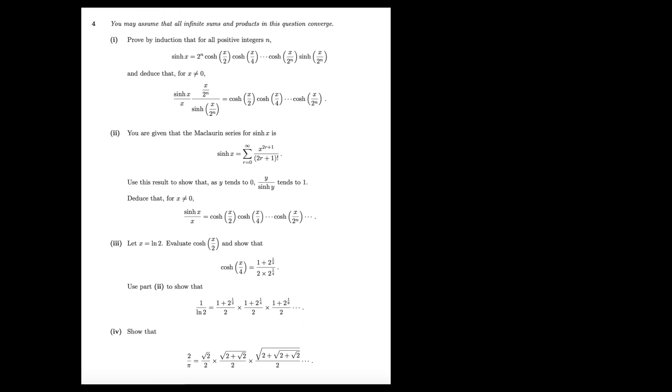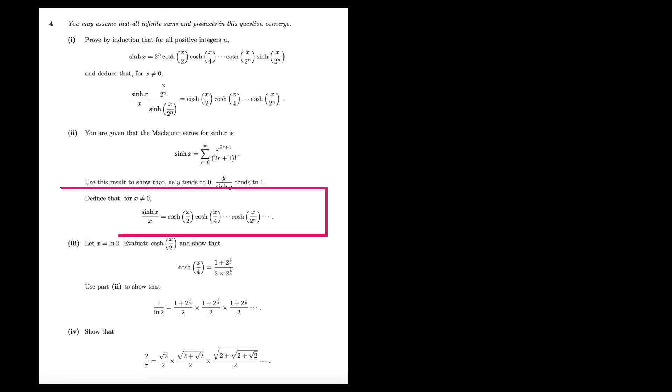So here is the proof. It came out as the last part of the question where candidates are supposed to use a previous result in the question. By setting x equals to i pi over 2, we get an expression involving hyperbolic functions.